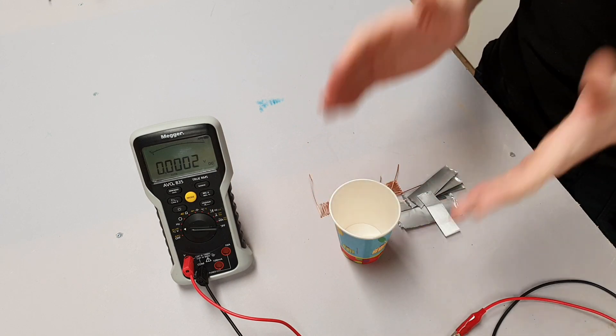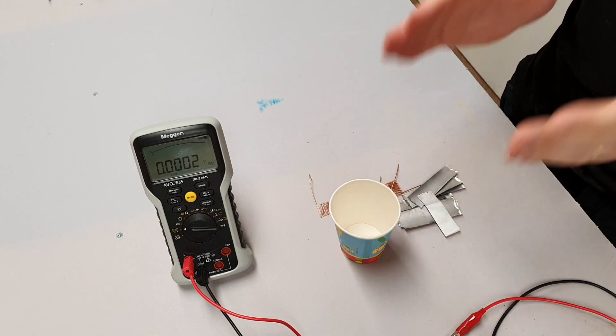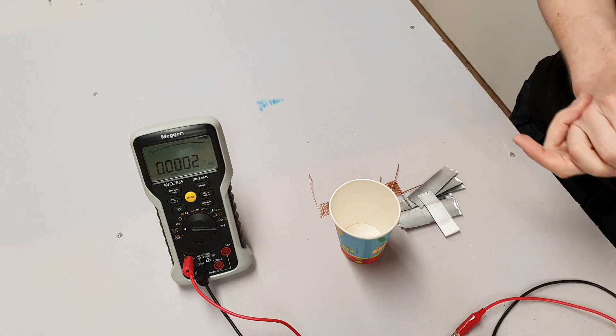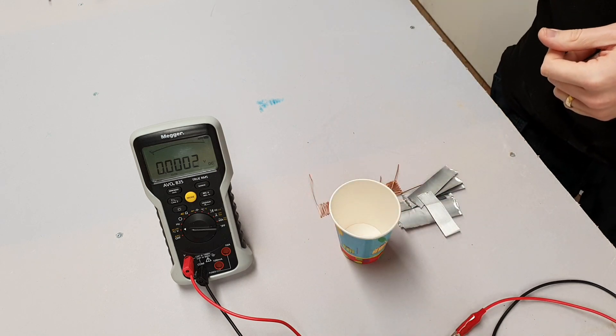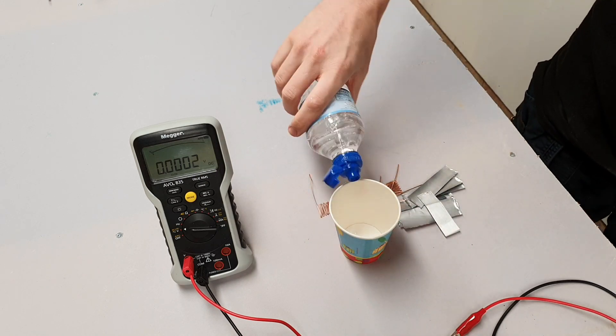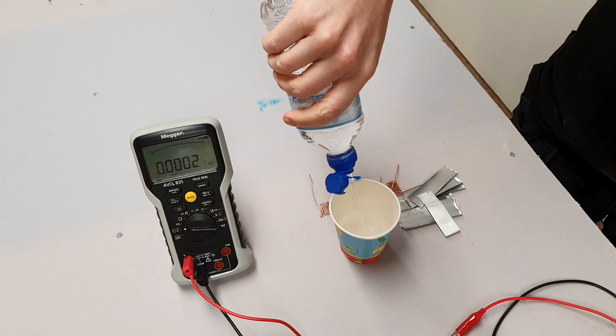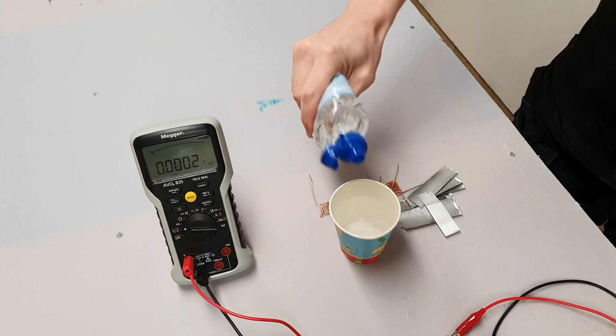We're going to create a chemical reaction that will hopefully produce some electricity for us. We've just got a cup here made out of a non-conductive material - it's a paper cup. We're just going to add to that some water, fill it up so it's about three quarters of the way full.